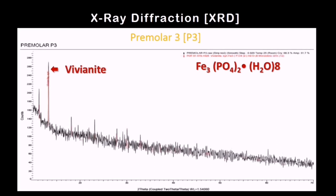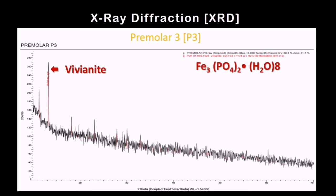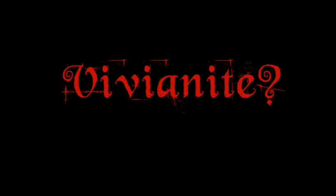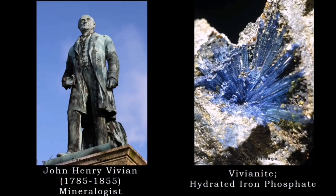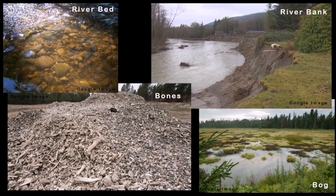The formula is Fe3 iron phosphate hydroxide. Vivianite is a hydrated iron phosphate named after Welsh mineralogist John Henry Vivian, who discovered this mineral somewhere in the 17th century. Vivianite is usually found in the riverbed or riverbank, in bogs, or places where you can find a lot of animal or even human bones. In my case, the bones were discovered at the riverbank, so this tallied with the differentials.